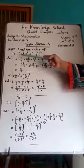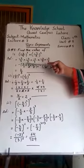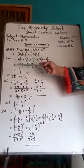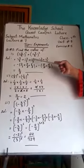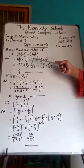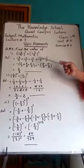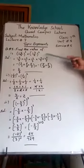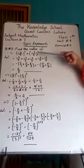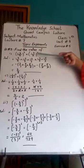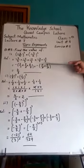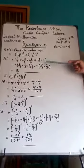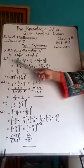The exponent is 3, so we will multiply the complete fraction 3 times: minus 2 by 3, multiply by minus 2 by 3, multiply by minus 2 by 3. The second fraction is minus 3 by 2, whole square — exponent 2 — so we will write it 2 times: minus 3 by 2, multiply by minus 3 by 2.